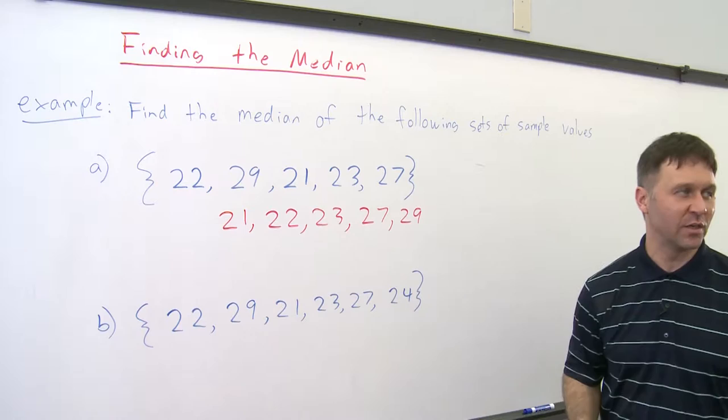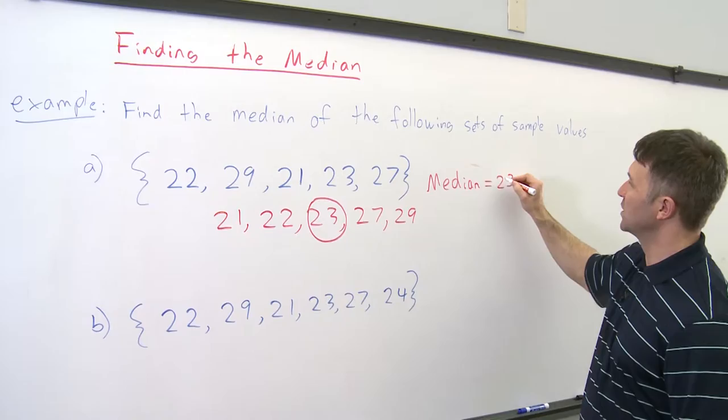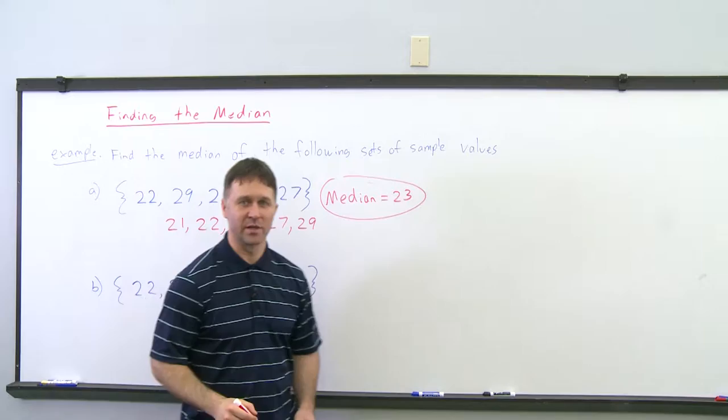So we listed them in order of increasing magnitude. So the median is going to be the middle value, which in this case is 23. So for the first set, the median is equal to 23.